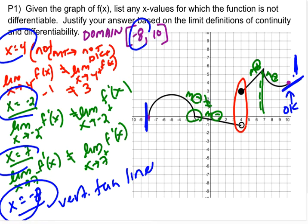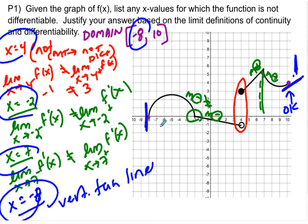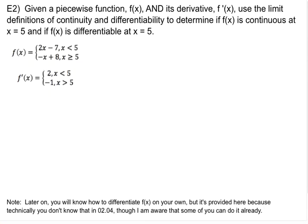Now let's look at this in a different way when we're actually given a function rule. Both of those graphs were essentially piecewise functions — weird-looking piecewise functions, but piecewise functions. So now let's look at a piecewise function. Given a piecewise function f of x and its derivative f prime of x, use the limit definitions of continuity and differentiability to determine if f is continuous at x equals 5 and differentiable at x equals 5. I gave you f prime of x — you'll know how to find that eventually, but for right now I've given it to you.